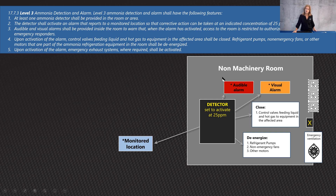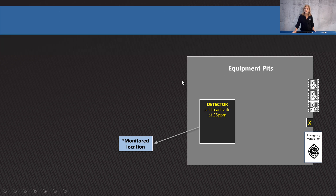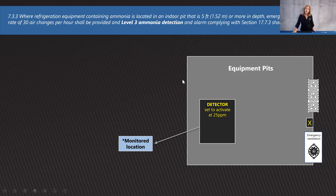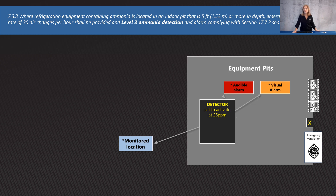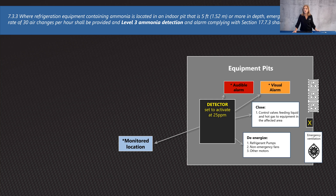For indoor equipment pits deeper than five feet, you have to have level three ammonia detection — the strictest level. This means audio/visual alarms, signal a monitored location, at least one detector, close your valves, and de-energize your pumps, non-emergency vents, and other motors.